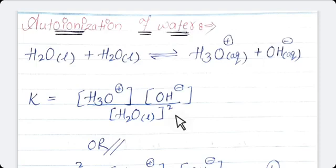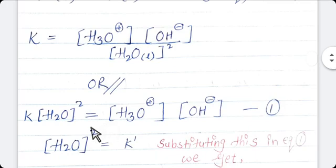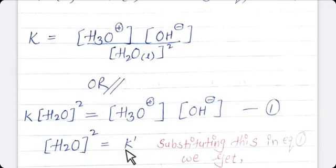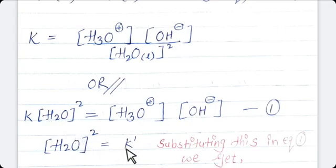You can also write this dissociation formula in another manner, where concentration of H₂O liquid squared appears in the denominator. When it moves to the other side of the equals sign, it is in multiplication form. This H₂O squared in excess quantity means the majority of H₂O molecules are undissociated, so consequently the concentration of H₂O will become constant, denoted by K dash.